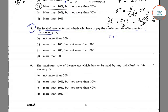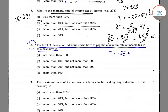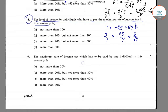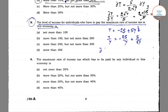Since t equals minus 25 plus 5y to the power half, we can write t/y equals minus 25/y plus 5 divided by root y. Now differentiating t/y with respect to y, we get d(t/y)/dy equals plus 25/y squared minus 5 into y to the power minus 3/2 divided by 2.